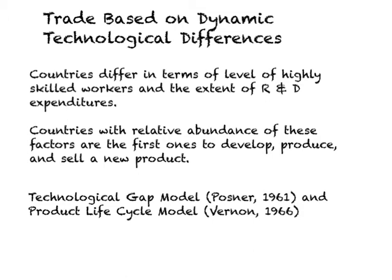Technologically advanced countries have the resources to be the first ones to develop, produce, and sell a new product. They have a relative abundance of highly skilled workers and high R&D spending. The first model which explained this phenomenon is called the technological gap model, due to Posner in 1961. This was extended and generalized by Vernon in 1966, and is called the product life cycle model.